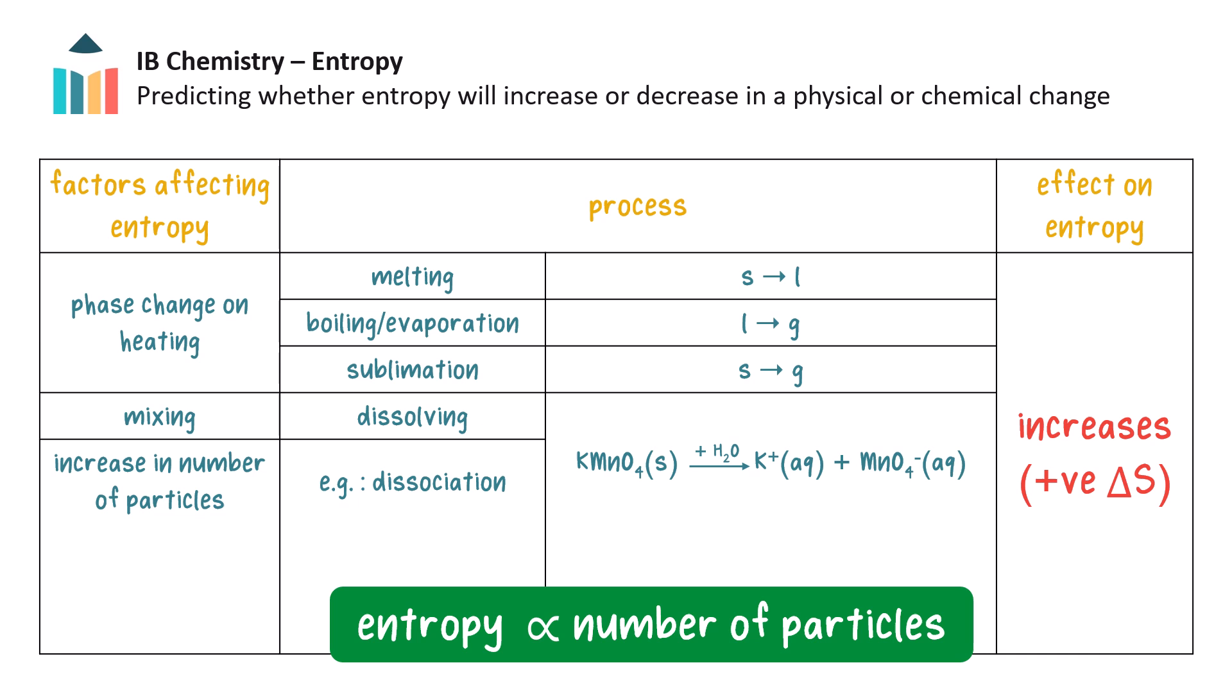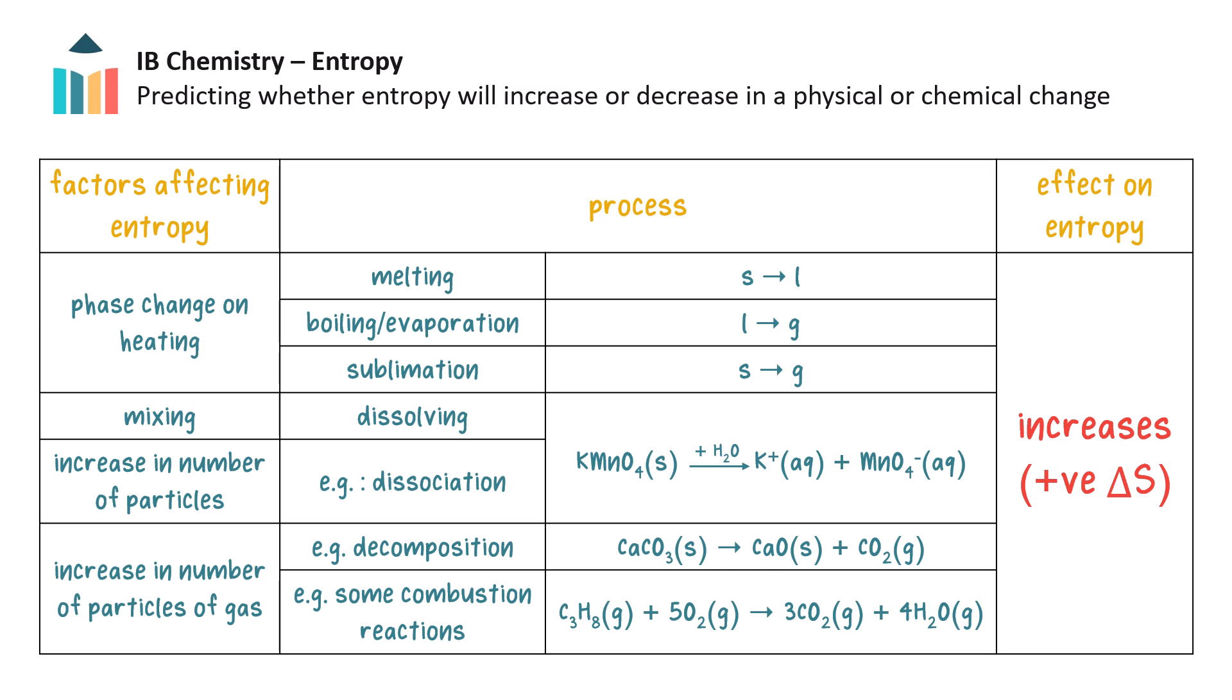Entropy is directly proportional to the number of particles in a system. More particles means more ways in which the particles can arrange and move. An increase in the number of gas particles also increases a system's entropy. For example, in decomposition reactions that produce gas and in the combustion of many hydrocarbons. Here we have 6 moles of gas producing 7 moles of gas.